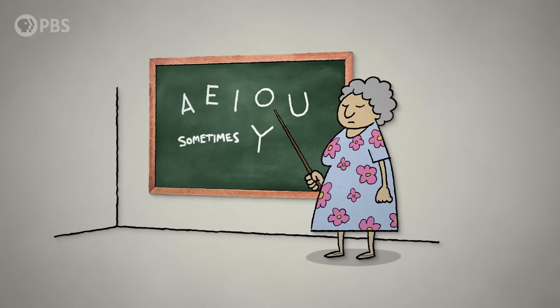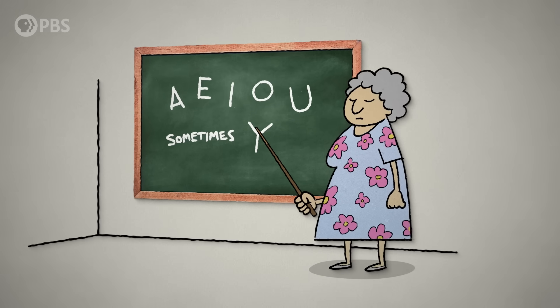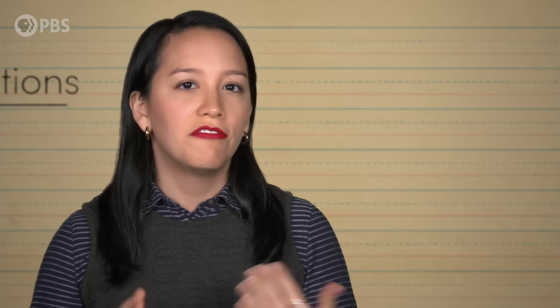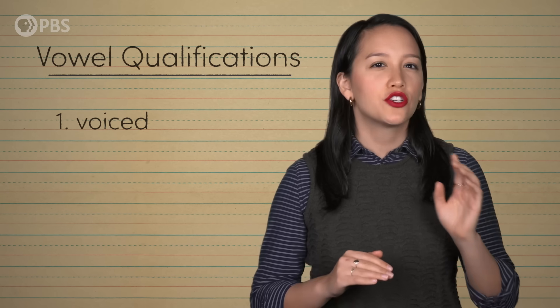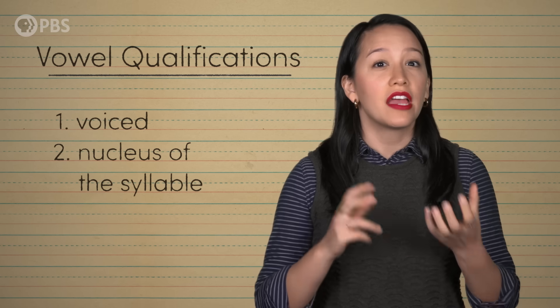As a child, you were probably just told to memorize that the vowels were A, E, I, O, U, and sometimes Y. But linguists define vowels not so much as letters, but sounds. English has around 20 vowel phonemes. To qualify as a vowel, a sound must meet a few general criteria. First, it must be voiced, meaning your voice box vibrates when you make it. Phonemes like s, sh, and h are voiceless — they're breath only. Second, it should function as the nucleus, or peak, of a syllable, the central sound that gives a syllable its length and volume.